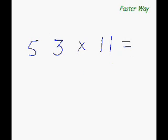The faster way of multiplying any two-digit number with 11 is that you add the two digits and you sandwich the result in between. That is, 5 plus 3 is 8, and you write 8 here. So the answer is 583. See, it's so simple.